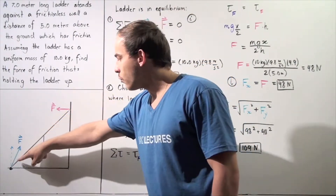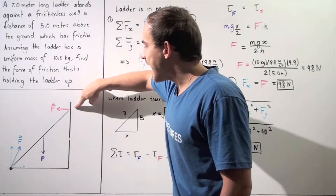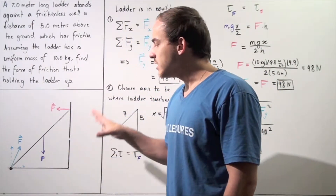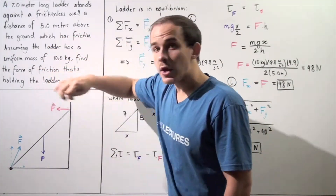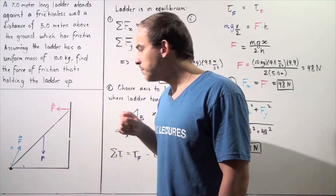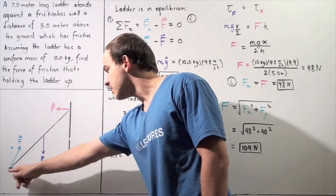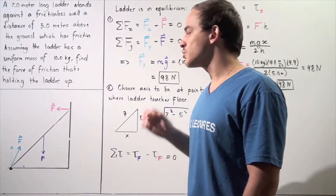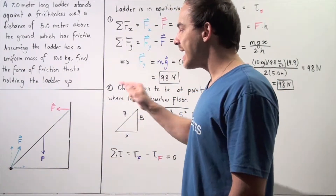Our ladder has a uniform mass of 10 kilograms and a length of 7 meters. The distance from the ground to where the ladder rests against the wall is 5 meters; the base distance is unknown and we'll find it shortly. There are 3 forces acting on the ladder: the red force created by the wall, pointing along the x-axis; the purple force of gravity acting at the center of mass; and the blue force acting at some unknown angle with respect to the x-axis, which is the force of friction created by the ground.